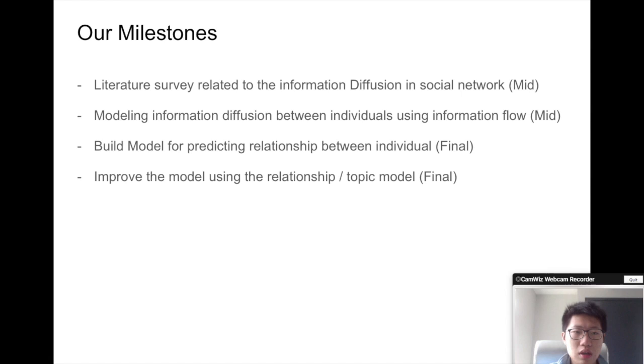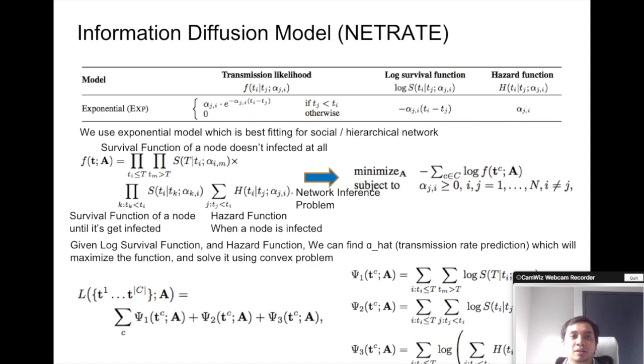According to our main milestones, we will do the literature survey before midterm, and also we need to do the modeling information diffusion between individuals using information flow. My partner will talk in more detail.